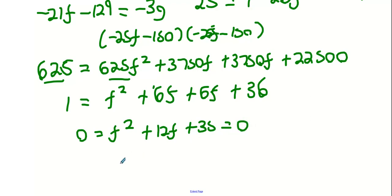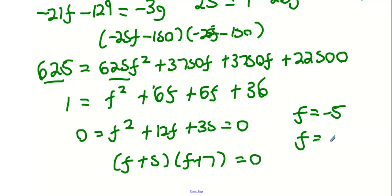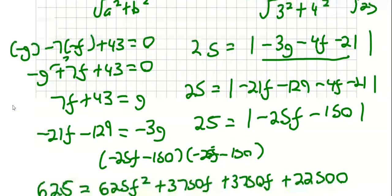Factoring f squared plus 12f plus 35 equals zero gives (f plus 5)(f plus 7) equals zero. So f equals minus 5 and f equals minus 7.